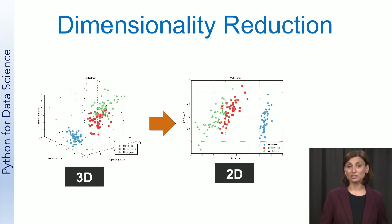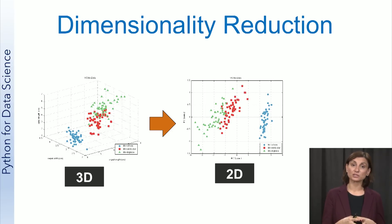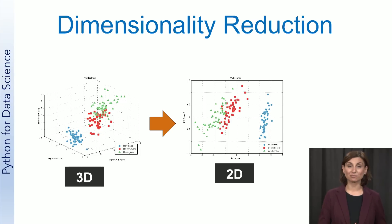Dimensionality reduction is useful when the dataset has a large number of dimensions. It involves finding a smaller subset of dimensions that captures most of the variation in the data. This reduces the dimensions of the data while eliminating irrelevant features and makes analysis simpler. A technique commonly used for dimensionality reduction is called principal component analysis.